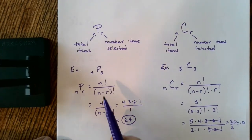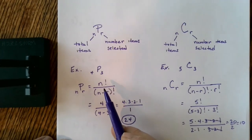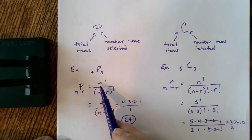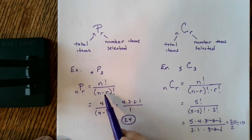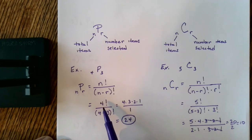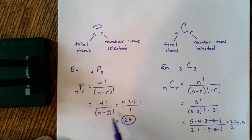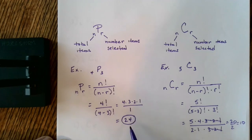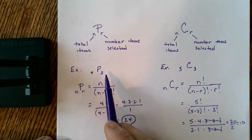The formula is n factorial divided by (n minus r) factorial. So with n = 4 and r = 3, it's 4 factorial divided by (4 minus 3) factorial. Four minus three is one, so this becomes 4 × 3 × 2 × 1 divided by 1, which is 24. So there are 24 possible outcomes when you take 4 items and pick 3 at a time.